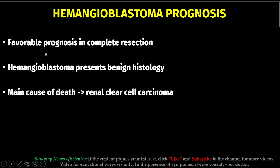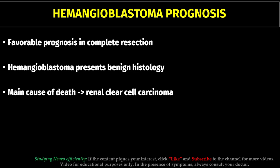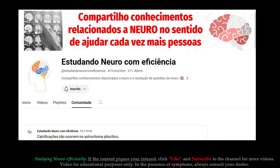The prognosis tends to be favorable when complete resection is achieved. Hemangioblastoma is a Grade 1 tumor and presents benign histology. The main cause of death in patients with hemangioblastoma is renal clear cell carcinoma. Thank you for watching this video. If you like this content, click like and subscribe to the channel.